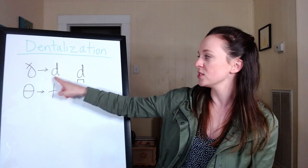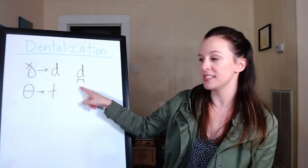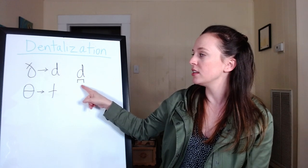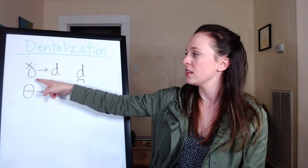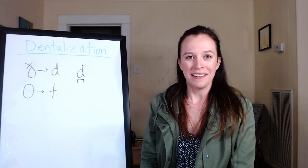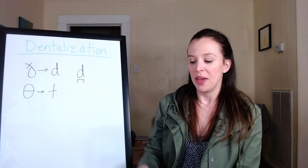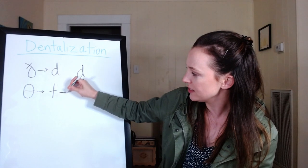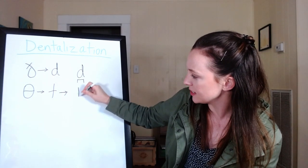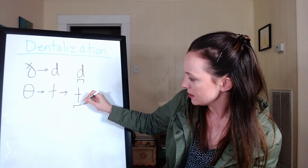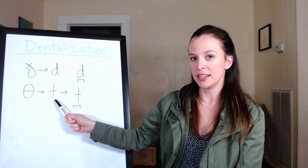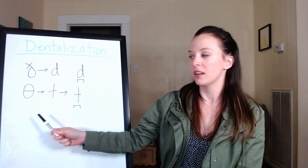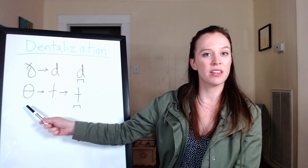So let's try it together. We'll start here, then we'll go to the dentalized D and then we'll go to the TH so you can move your tongue around. You did it. Nice job. And with the voiceless TH sound, it can come out kind of sounding like a dentalized T. So instead of T, it becomes T.